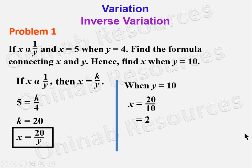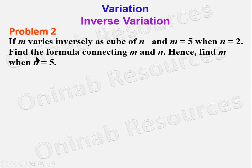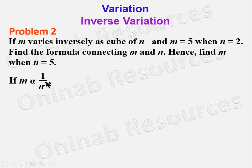We go to Problem 2. If m varies inversely as the cube of n and m = 5 when n = 2, find the formula connecting m and n, and hence find m when n = 5. Since m varies inversely as the cube of n, that is m α 1/n³, then m = k/n³.